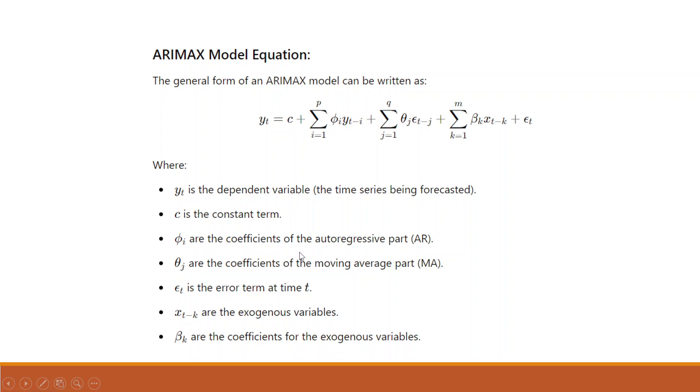Phi are the coefficients of the autoregressive part. Theta j are the coefficients of the moving average, the lagged values of the error terms. Et is the error term at time t. Xt minus k are the exogenous variables, that is external variables. Beta k are the coefficients for the exogenous variables.